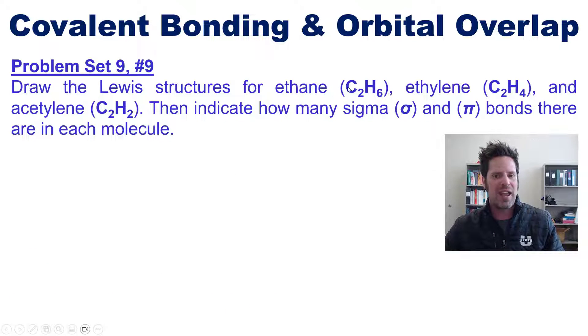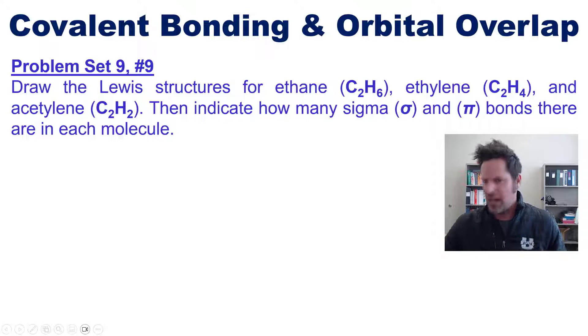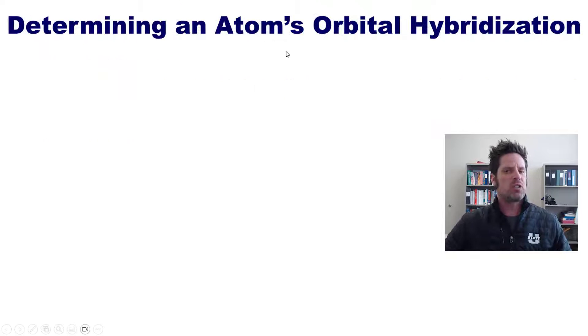Let's jump then to another question, which I will make you do on your own. I want you to draw the Lewis structures for ethane, ethylene, and acetylene, whose formulas are shown right here, and then indicate how many sigma and pi bonds there are within each molecule. We now leave that subject and move on to this one: determining an atom's orbital hybridization.